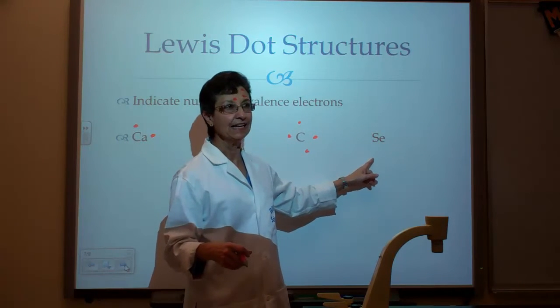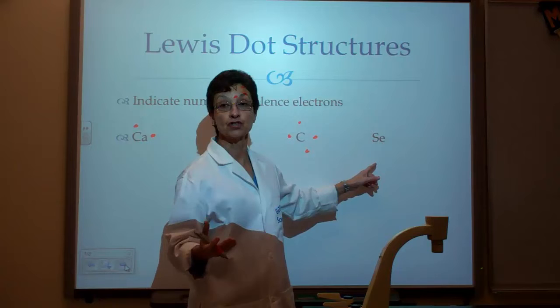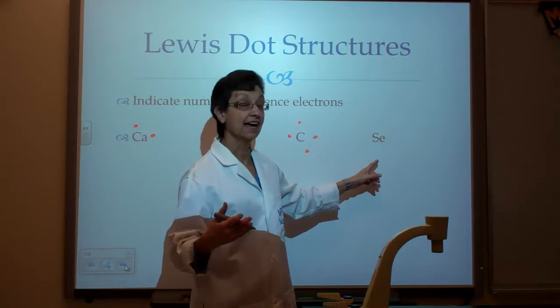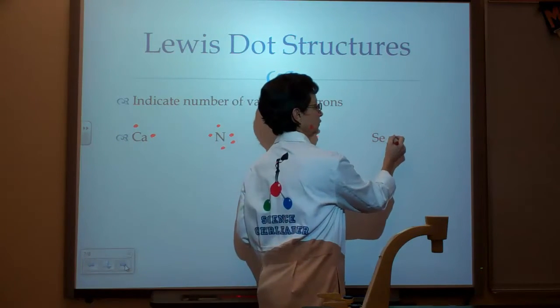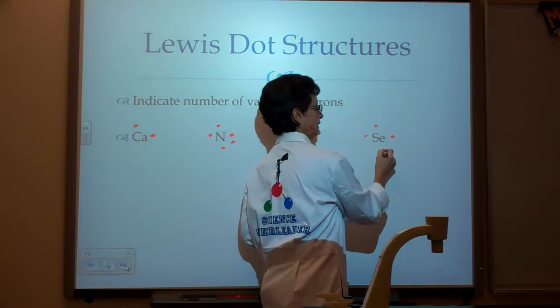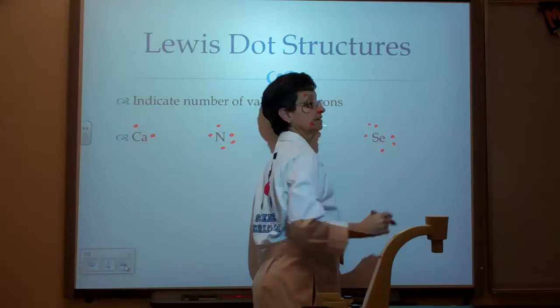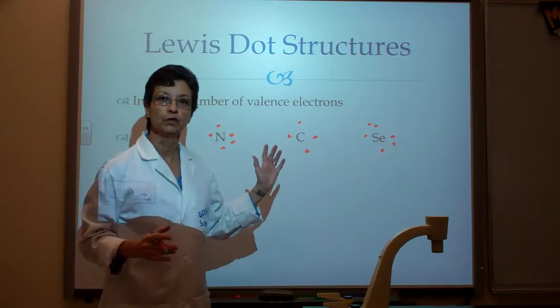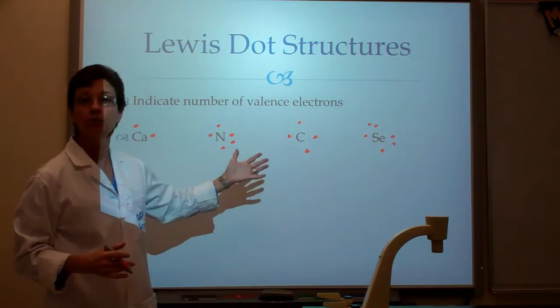And then finally, we have Se, which is in the oxygen family, and it has six valence electrons. So, one, two, three, four, five, and six, and we are done. Those are the Lewis dot configurations for these atoms.